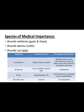Species of medical importance: Brucella melitensis, which is related with goats and sheep; Brucella abortus with cattle; and Brucella suis with pigs. So melitensis, abortus, and suis are the species of medical importance.